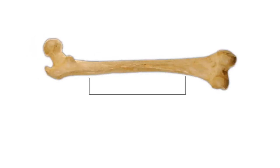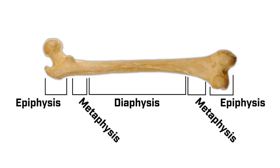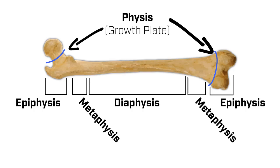Here's the long bone. There's the diaphysis, or the shaft in the middle, then the metaphysis, and finally the epiphysis at the end. Highlighted here in blue are the physes, also known as the growth plates.